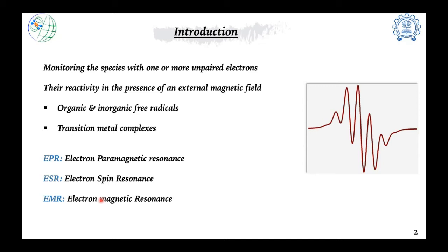This spectroscopy goes by three different names: electron paramagnetic resonance (EPR), electron spin resonance (ESR), and electron magnetic resonance (EMR). All three refer to the same phenomenon from different perspectives. For simplicity, I will stick with EPR for this talk, but ESR and EMR mean the same thing.